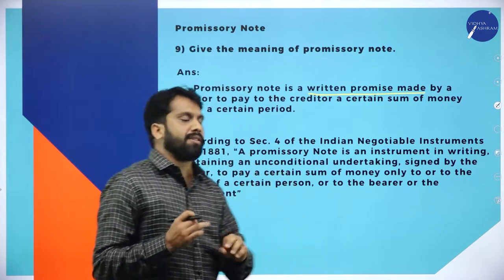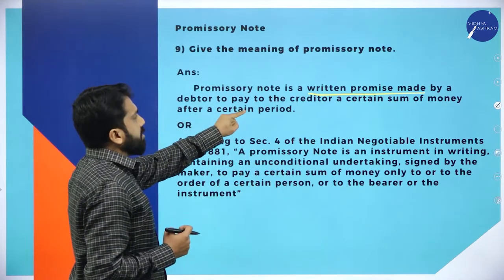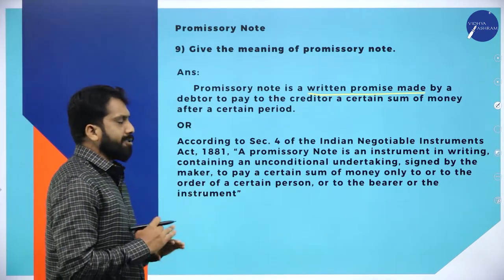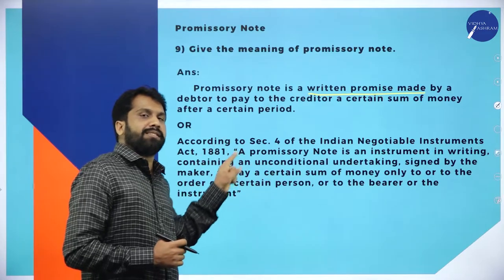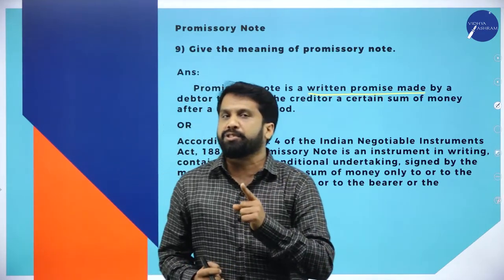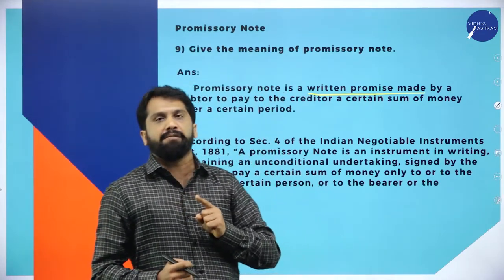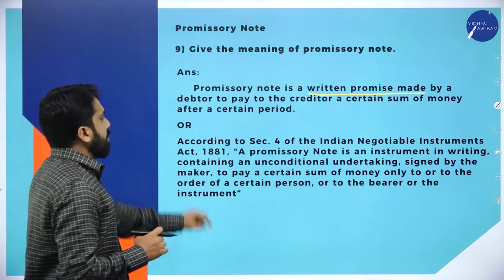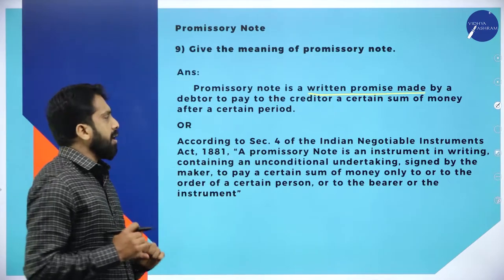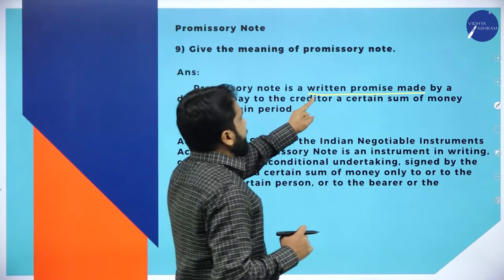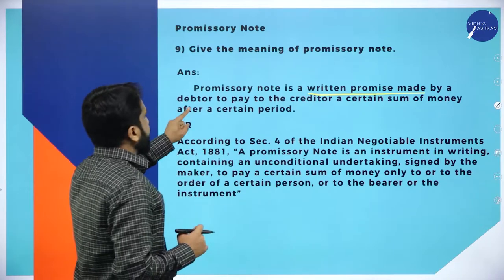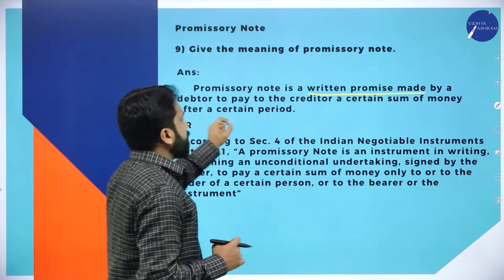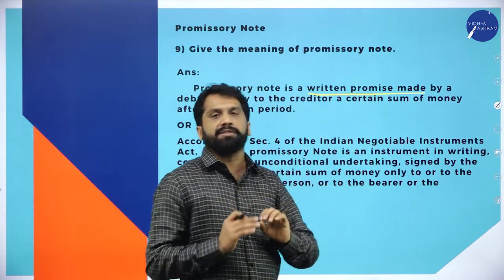Now for the formal definition of promissory note. We have taken this definition as per the Negotiable Instrument Act 1881. Promissory note is a written promise made by a debtor to pay to the creditor a certain sum of money after a certain period. Everything in the definition is not required for exam — only remember which Act it comes under.